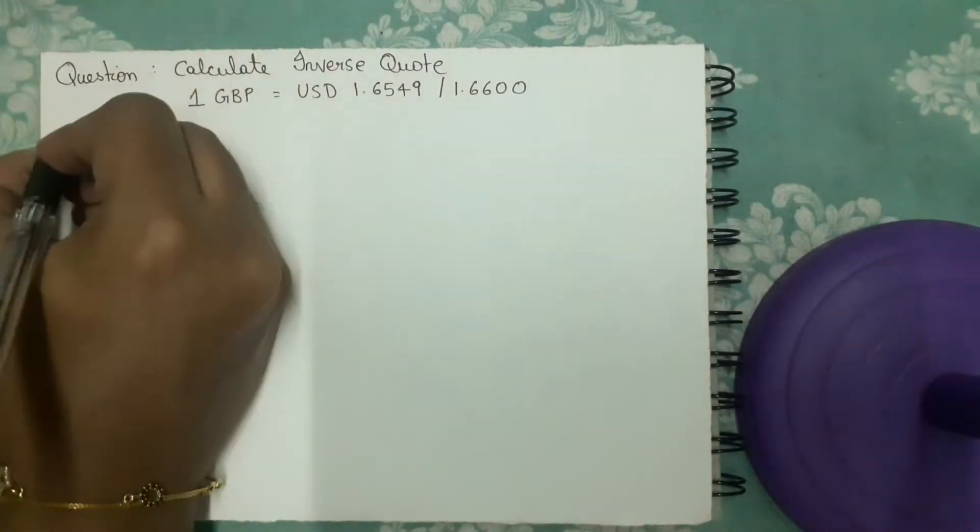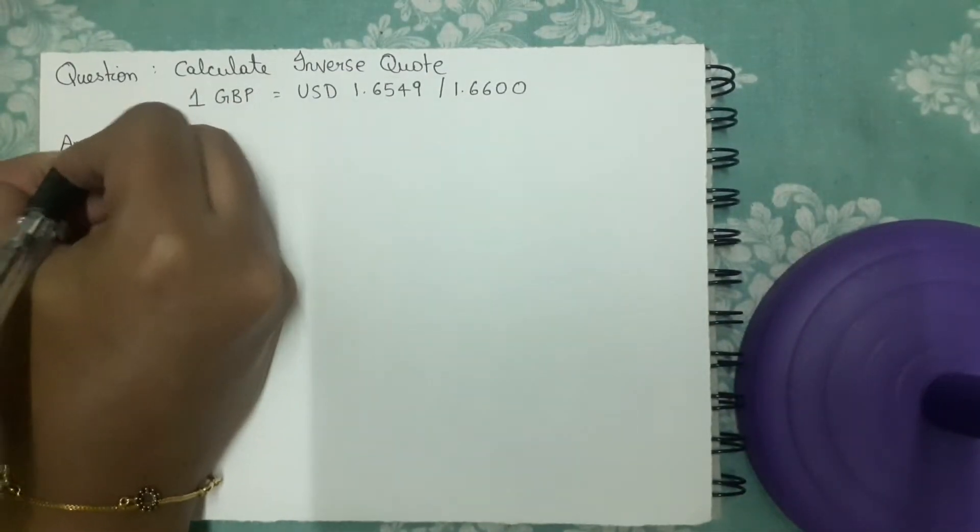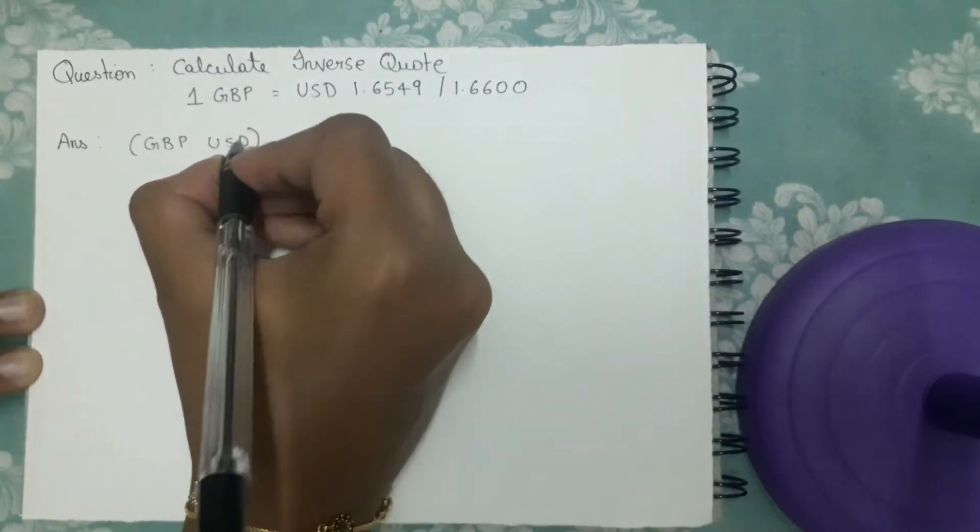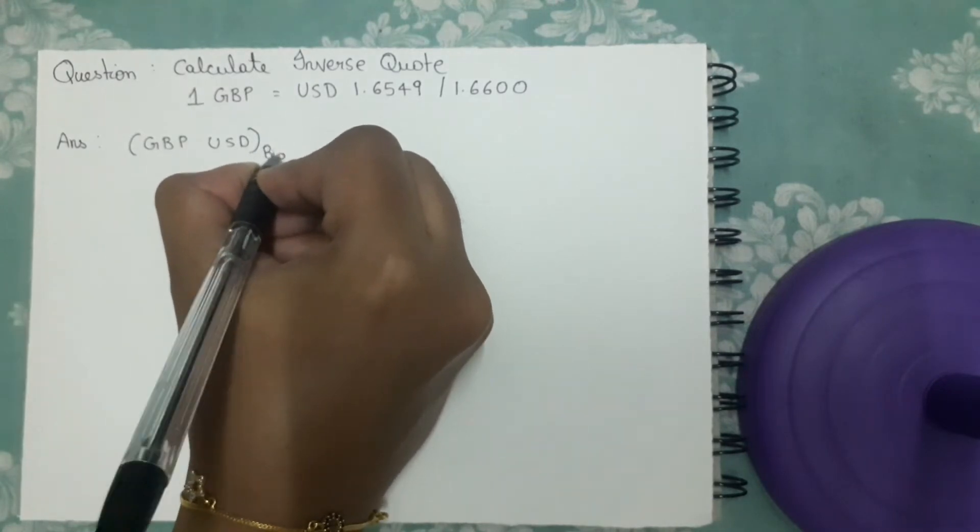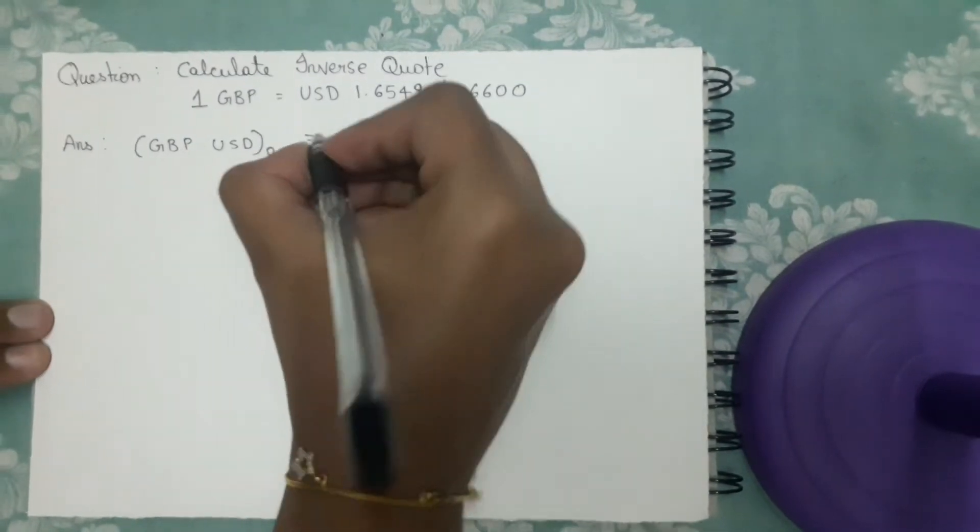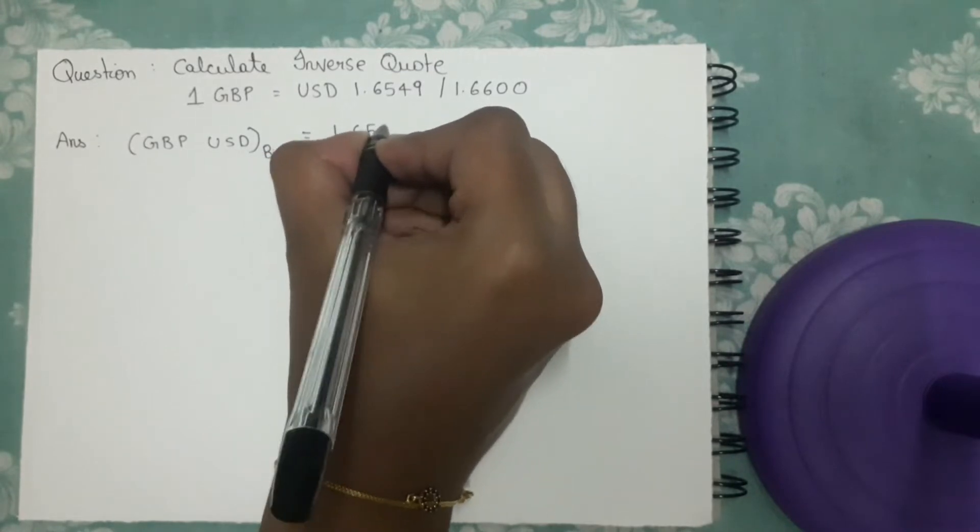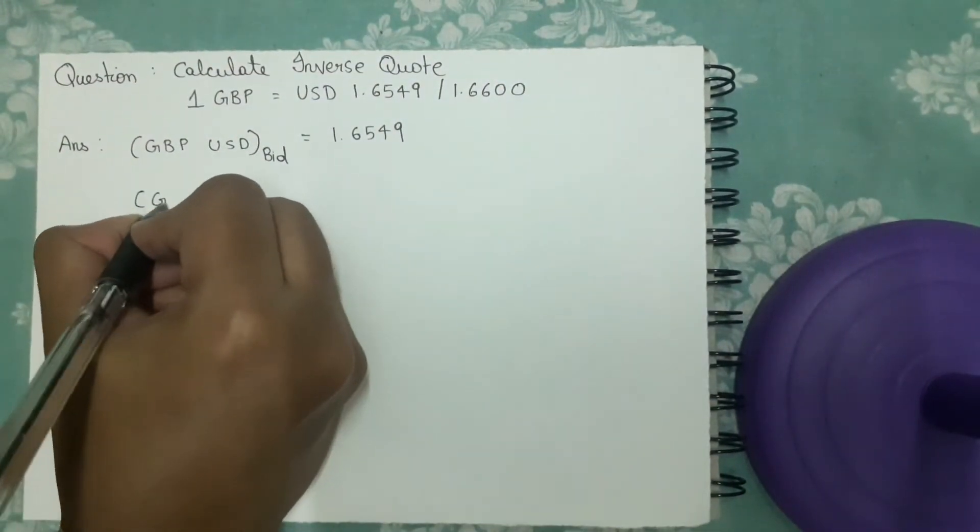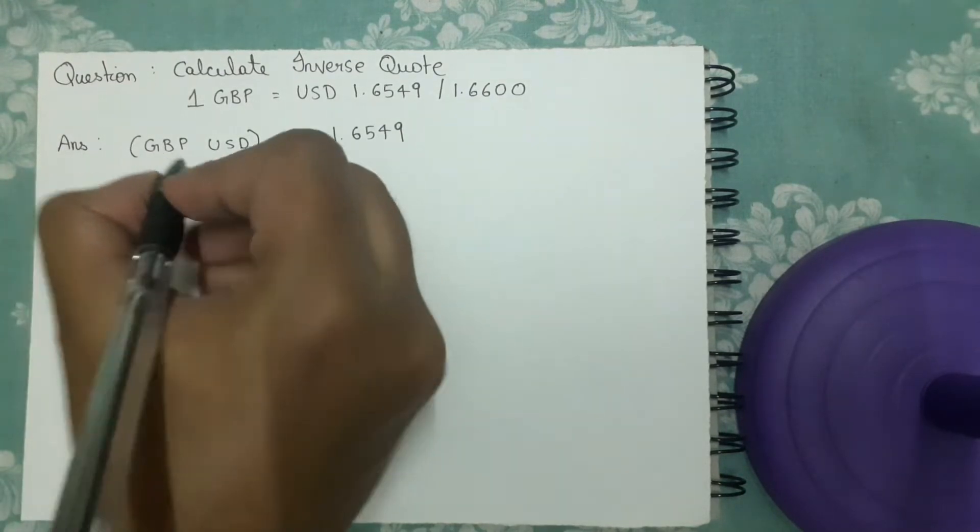Let's first write the information that is given. GBP/USD (Great Britain Pound US Dollar) bid rate is given to be 1.6549 and GBP/USD ask rate is given to be 1.6600.